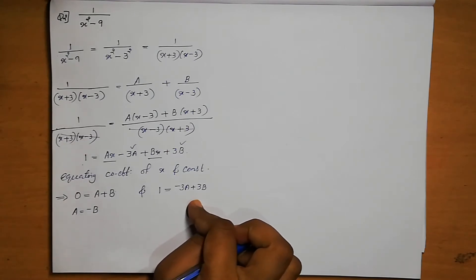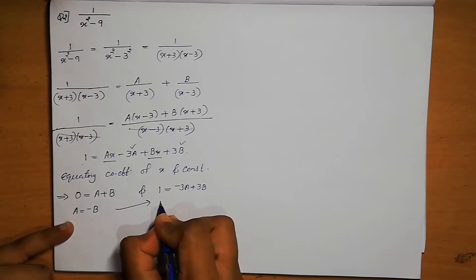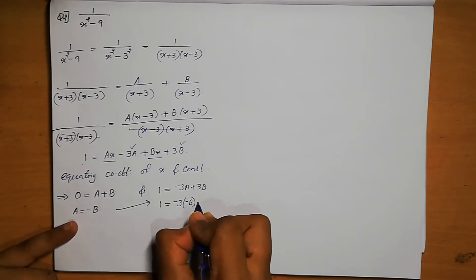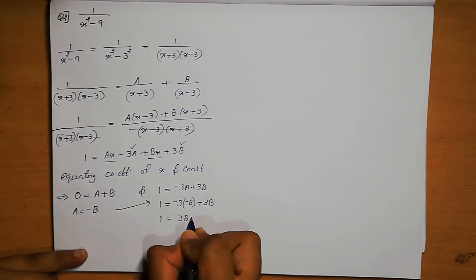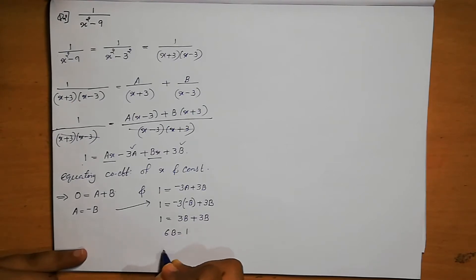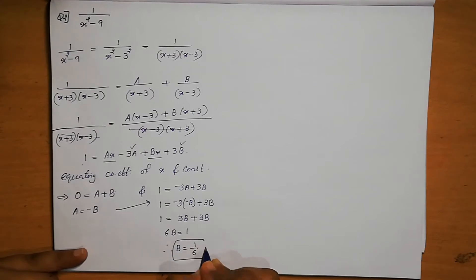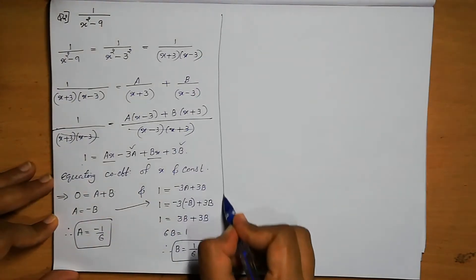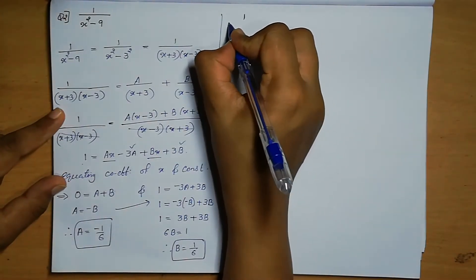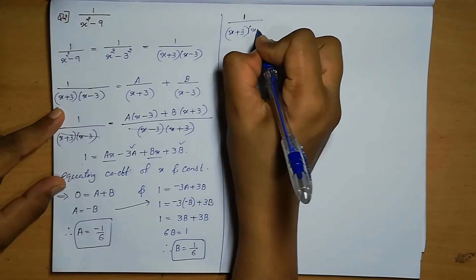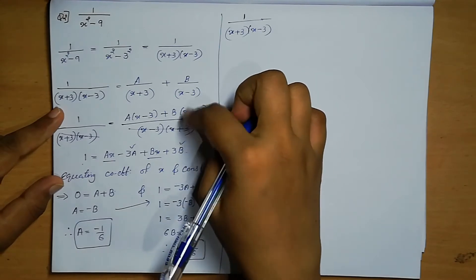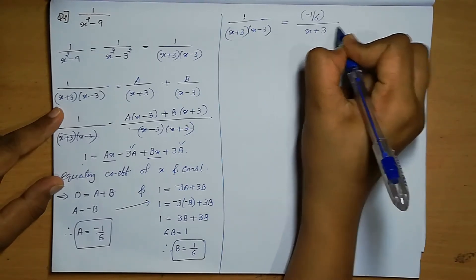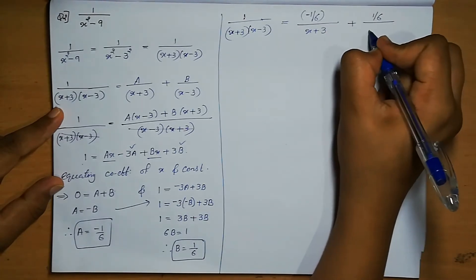Substituting A equals minus B into the constants equation: 1 equals minus 3(minus B) plus 3B equals 3B plus 3B equals 6B. Therefore, B equals 1 by 6, and A equals minus 1 by 6. Substituting: 1 by (x plus 3) into (x minus 3) equals (minus 1 by 6) by (x plus 3) plus (1 by 6) by (x minus 3).